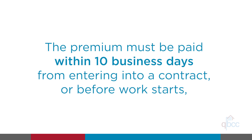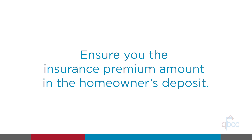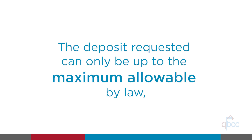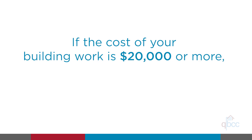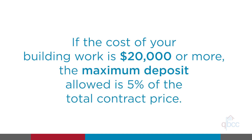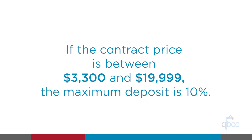When the premium should be paid: the premium must be paid either within 10 business days from entering into a contract, or before work starts, whichever occurs earlier. Ensure you include the insurance premium amount in the homeowner's deposit. Please note the deposit requested can only be up to the maximum allowable by law and should include the cost of the insurance premium as part of the quoted deposit amount. Generally, if the cost of your building work is $20,000 or more, the maximum deposit allowed is 5% of the total contract price, including labour, materials and GST. If the contract price is between $3,300 and $19,999, the maximum deposit is 10%.